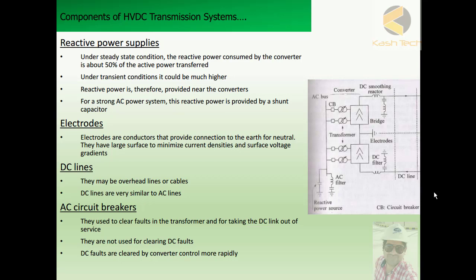AC circuit breakers are used to clear faults in the transformer and for taking the DC link out of service. They are not used for clearing DC faults. DC faults are cleared by converter control, more rapidly. As you can see in this diagram, the breakers are installed on the AC side and are used to break the current there.